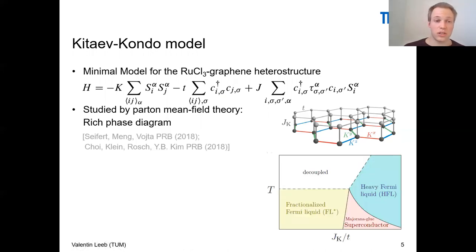Such models, or exactly this model, has already been studied previously by parton mean field theory. What has been found is a very rich phase diagram, as you can see here at the bottom, with very interesting phases, for example, this fractionalized Fermi liquid phase and also various phases corresponding to superconducting phases. Another part of the phase diagram is this heavy Fermi liquid phase. What's actually interesting for the heterostructure is this heavy Fermi liquid phase.